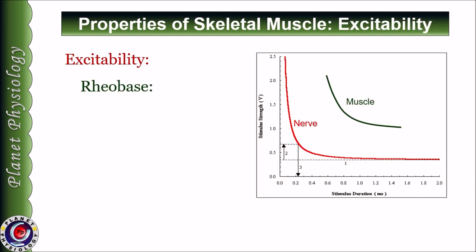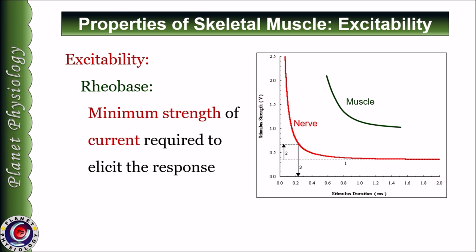Let us study the components of this strength-duration curve. The first component is rheobase. It is the minimum strength of the current required to elicit a response from the tissue. We have to give adequate time for the stimulus to act. As indicated by this dotted line, this is the strength required to elicit response from the nerve — this is the rheobase current for the nerve. Similarly, this is the rheobase current for the muscle. Any strength before this was not able to elicit response from the tissue, but at rheobase strength, the tissue showed response.